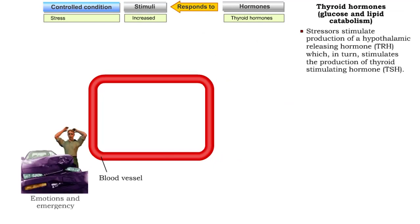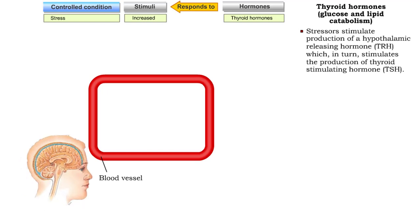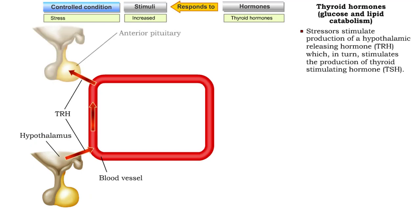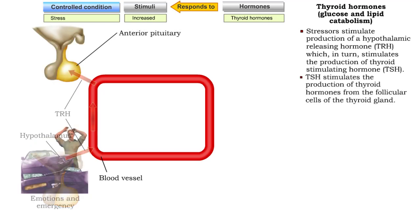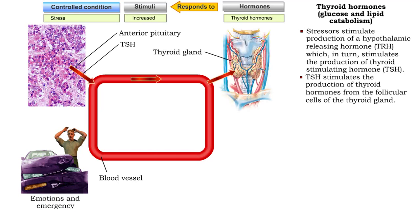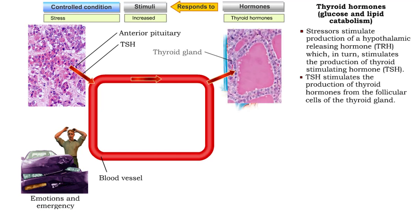Stressors, such as declining blood pressure due to blood loss or strong emotional reactions, stimulate production of hypothalamic-releasing hormone, TRH, which stimulates the production of thyroid-stimulating hormone, which targets the follicular cells of the thyroid gland to produce thyroid hormones.